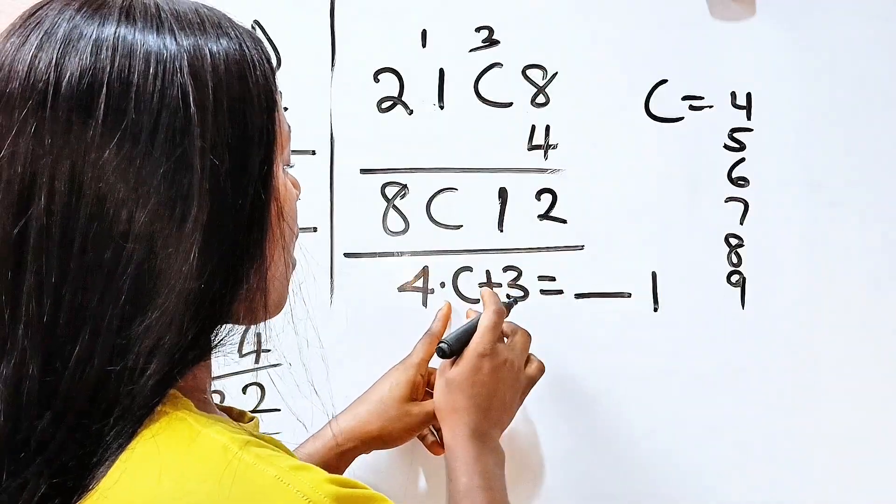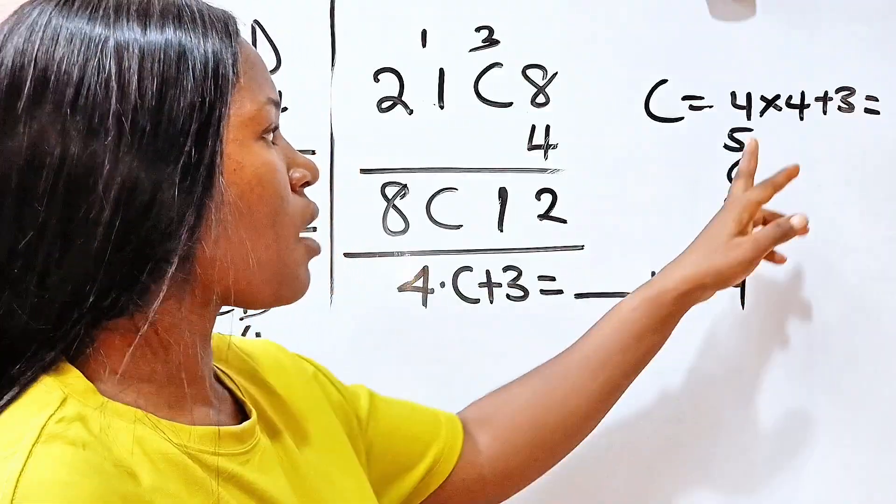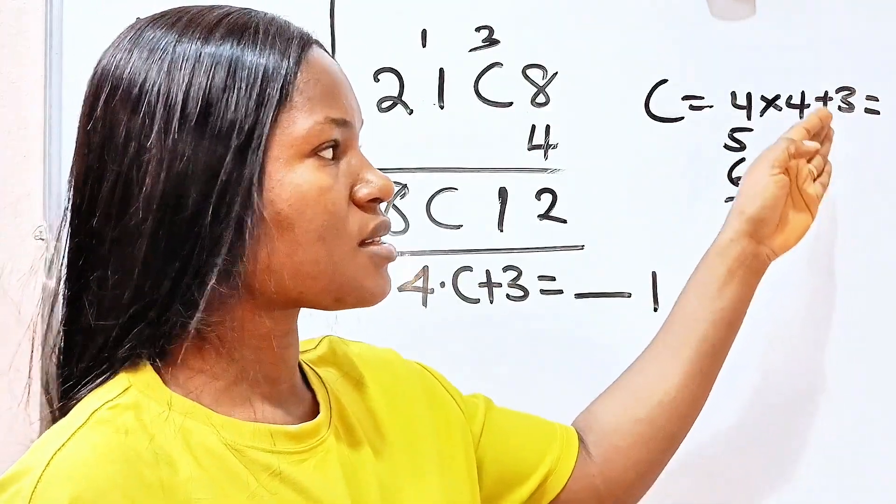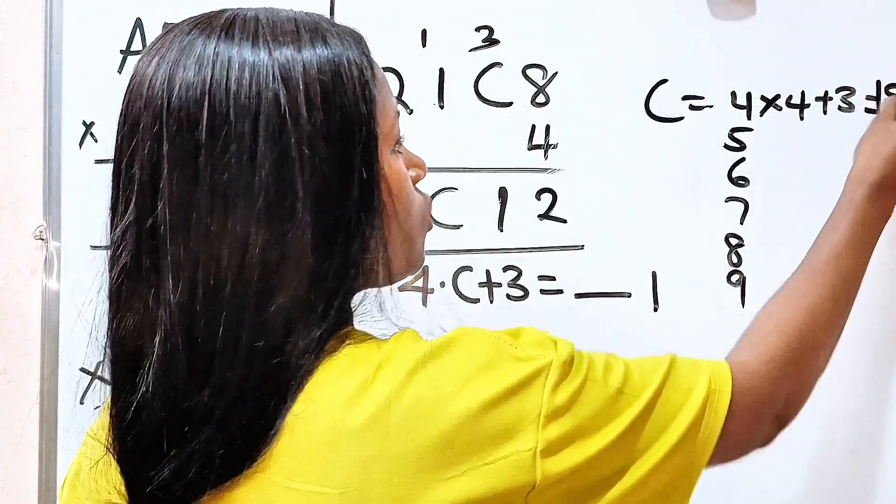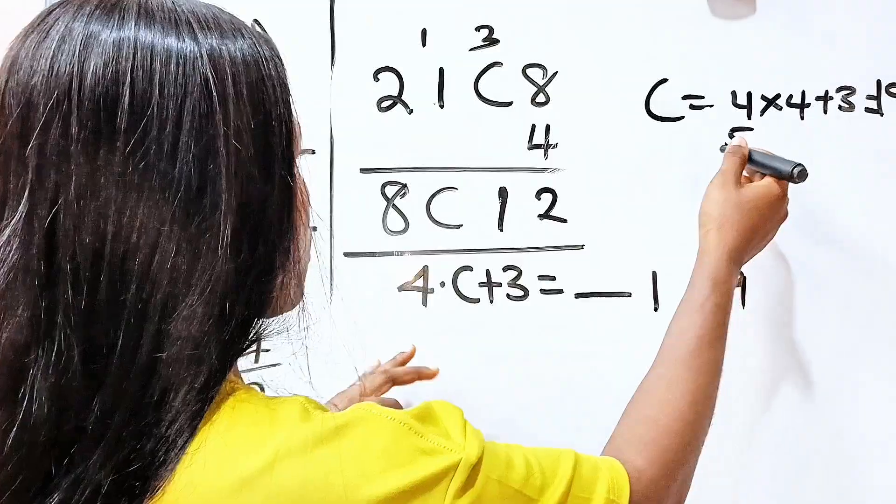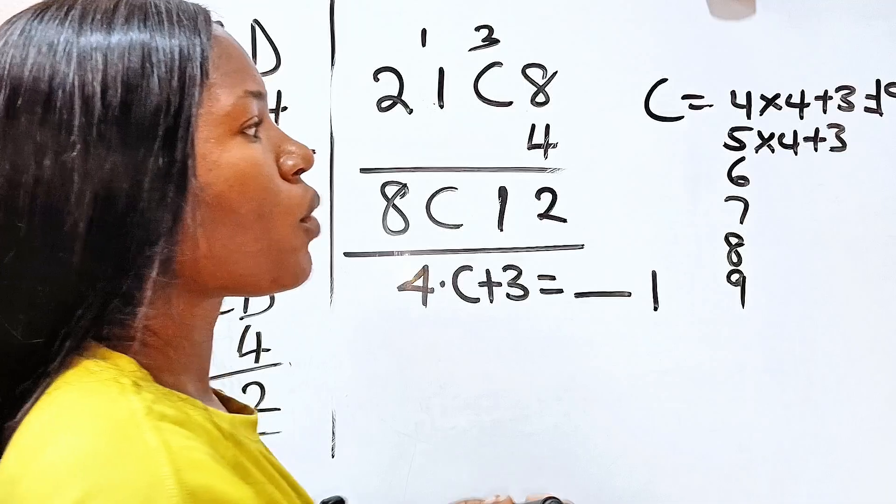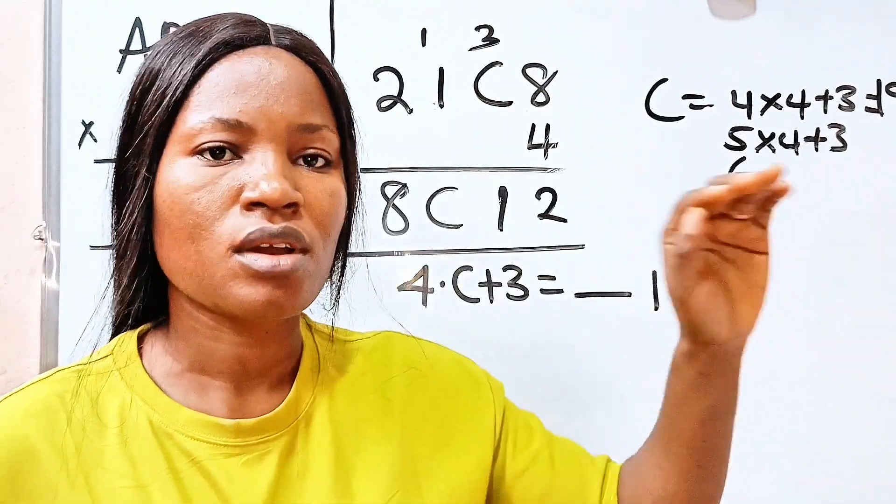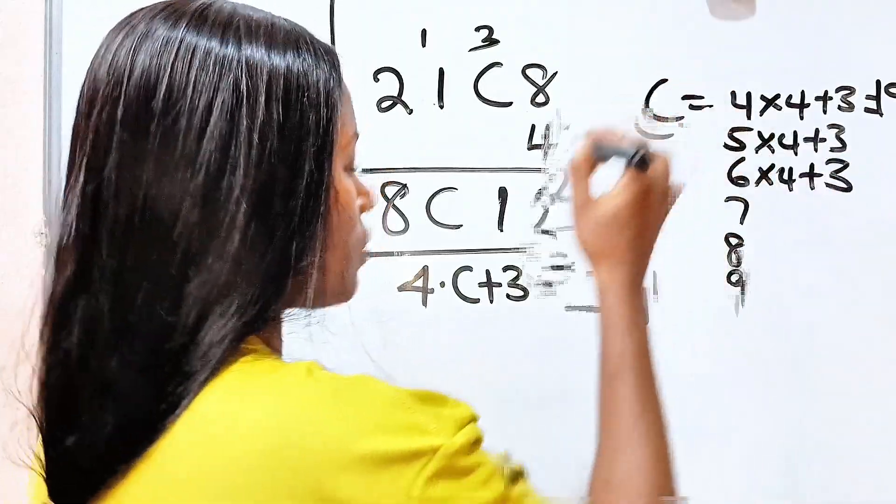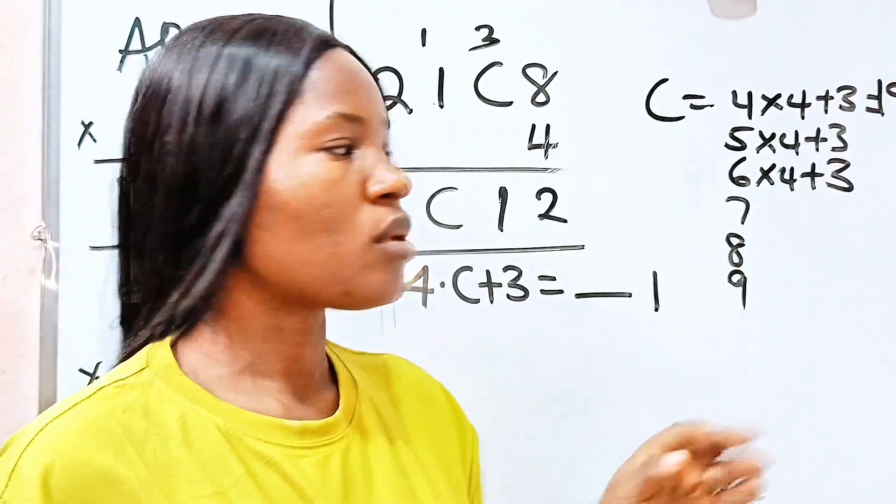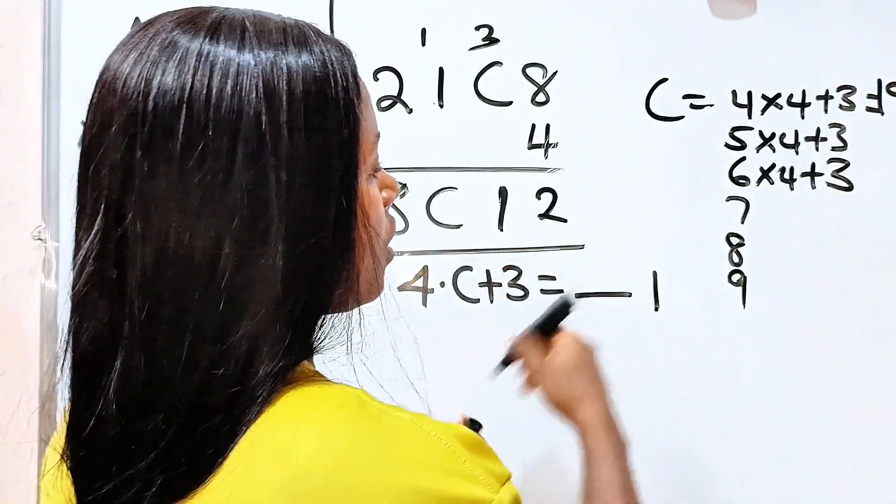If we say that our C is 4, it's going to be 4 times 4 plus 3. Now 4 times 4 is 16 and 16 plus 3 is 19. So that will not go. If C is 5, we are going to have 4 times 5, plus 3. 5 times 4 will give us 20. 20 plus 3 is 23. So that will not go as well. C is 6 times 4 plus 3. 6 times 4 is 24. And 24 plus 3 is 27. It doesn't end with 1.